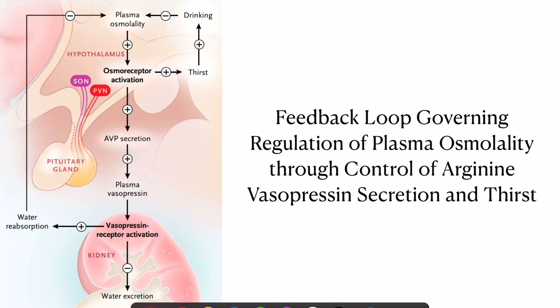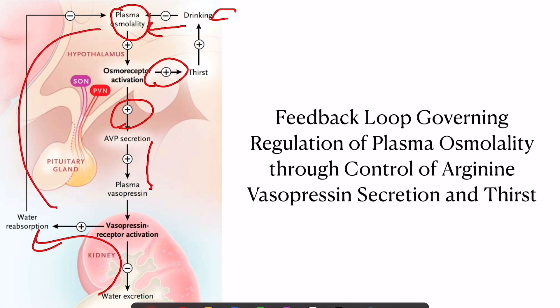When osmolarity is high, it triggers thirst and vasopressin release. Thirst stimulates drinking, which inhibits the osmoreceptors. Vasopressin acts on the kidney to cause water reabsorption, which in turn inhibits the osmolar stimulus. This feedback loop regulates the entire water homeostasis in the body.